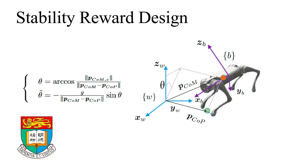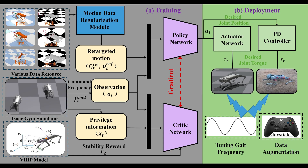Another strategy we utilize to enhance the robot's stability during the imitation task is a stability criteria reward based on a variable-height inverted pendulum model. The theta angle between the world z-axis and the COM-COP vector, as well as its second-order derivative, are used as penalty rewards.